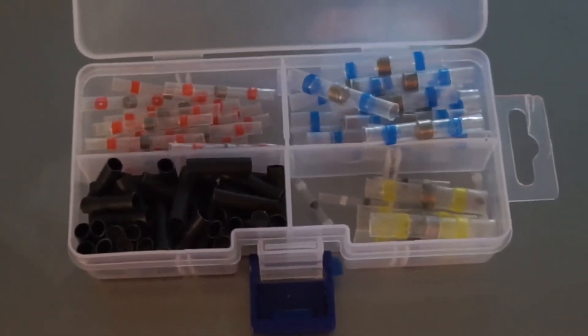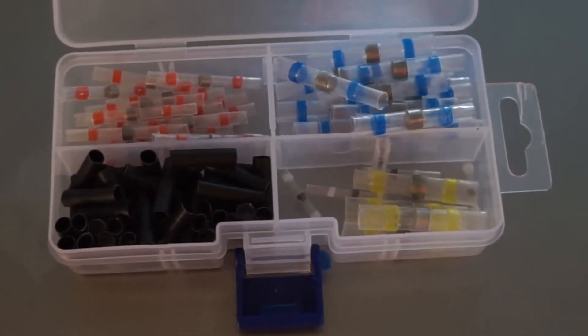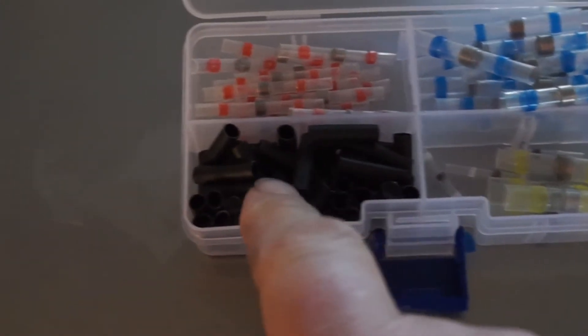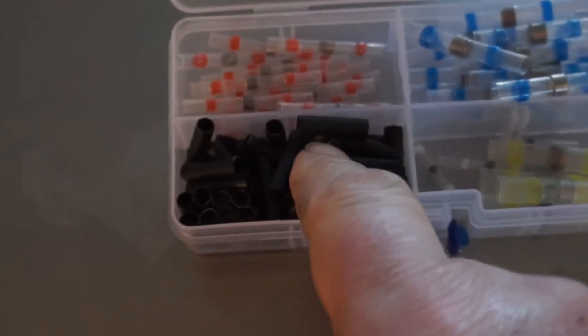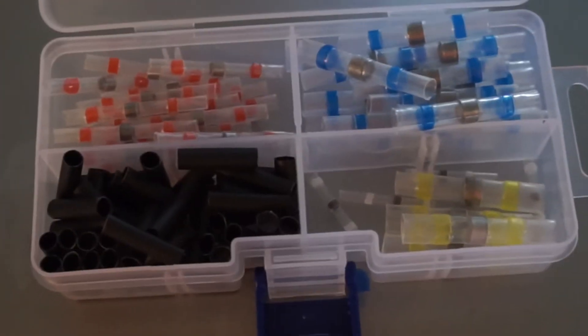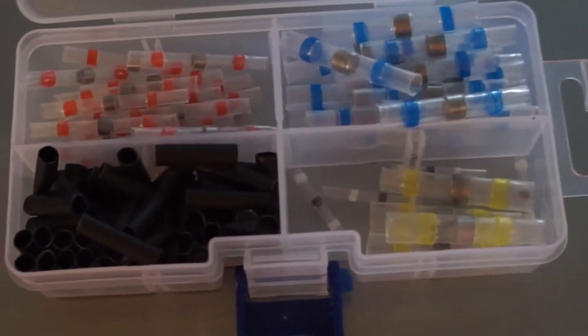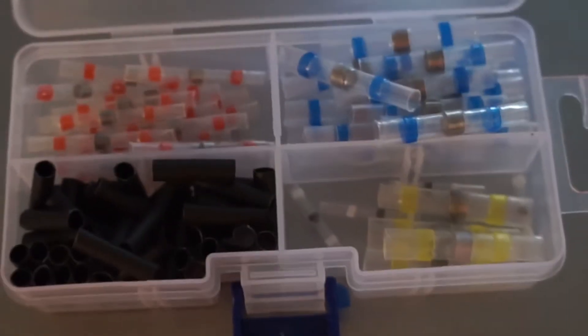And I knew going into it that the 100 piece comment was kind of a marketing lie because a good chunk of the parts in here aren't the solder connectors. They're just plain pieces of shrink wrap tubing which you don't even actually need when you're using these kind of connectors. But I'd say it was only a small amount of money. It was $6 for this whole kit. So either way, that's not bad.